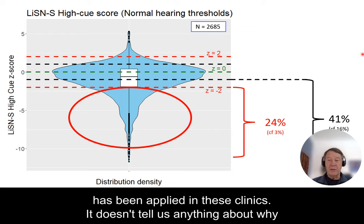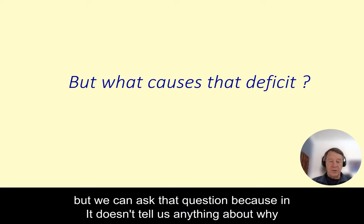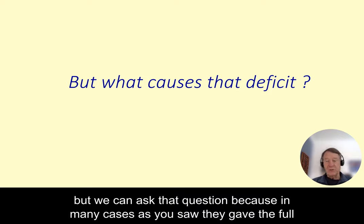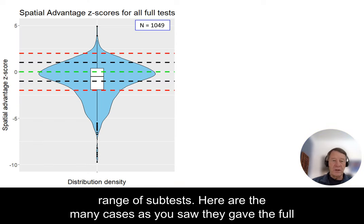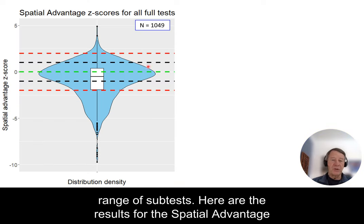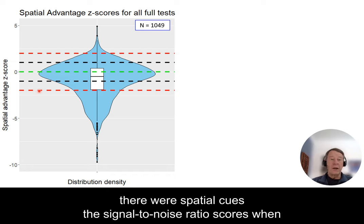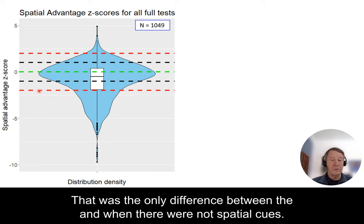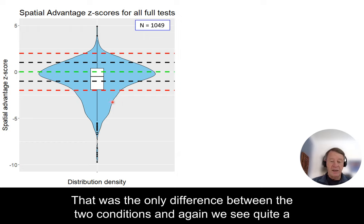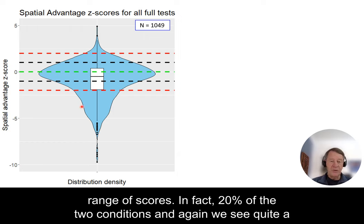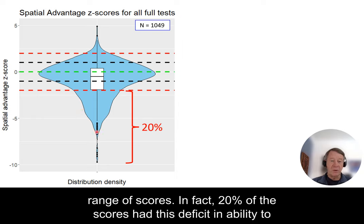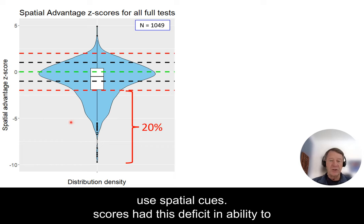This tells us there's a problem very often when LiSN-S has been applied in these clinics. It doesn't tell us anything about why, but we can ask that question because in many cases they gave the full range of subtests. Here are the results for the spatial advantage measure — the difference between the signal-to-noise ratios when there were spatial cues and when there were not — and again we see quite a range of scores. In fact 20% of scores had a deficit in ability to use spatial cues.